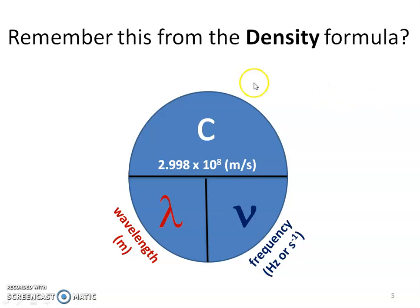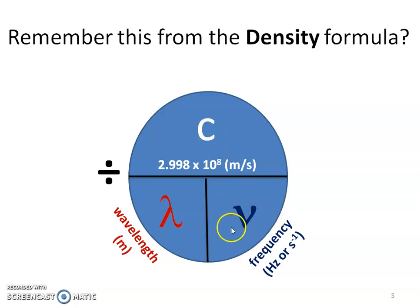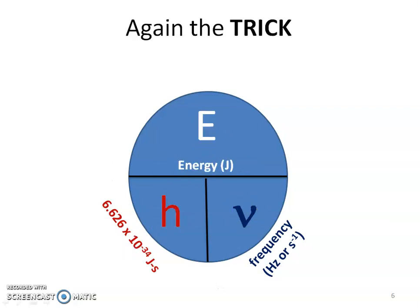Remember from the density formula, this really cool circle trick. Remember that this line means divide. So if we were to cover up wavelength, because that's what we're solving for, it would be speed of light divided by frequency. We can also go the other way — if we're covering up the speed of light, it would be wavelength times frequency. That trick also works for the energy formula: energy divided by frequency would give us Planck's constant. If I'm solving for energy, it would be Planck's constant times frequency. These things are going to be on your test, but you still need to be able to manipulate and rearrange the formula to solve for what you want.